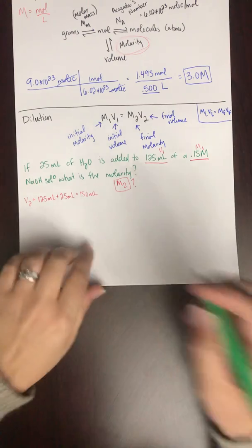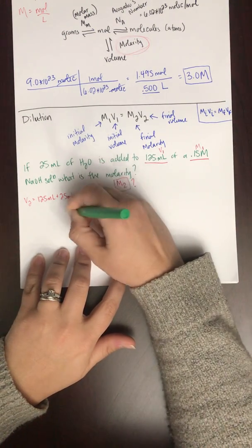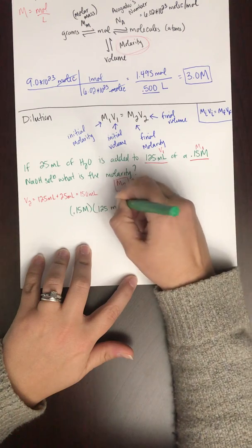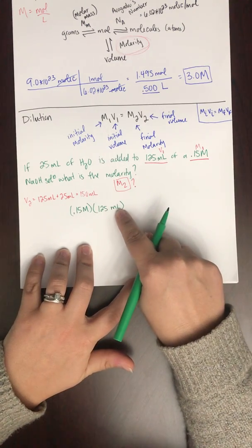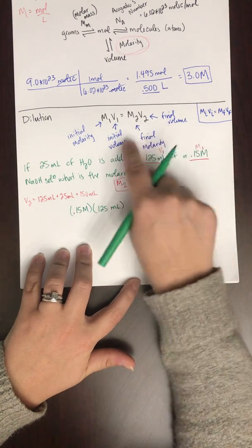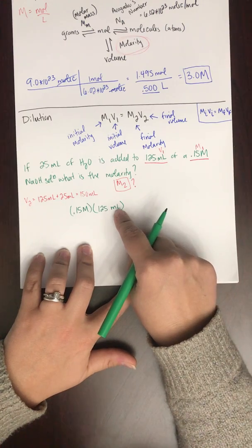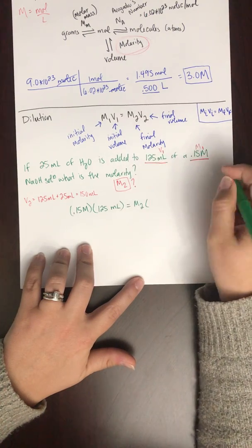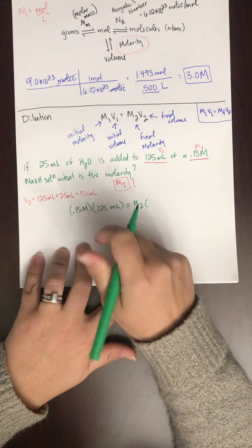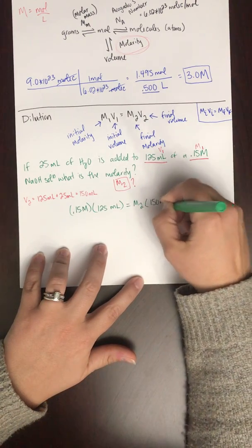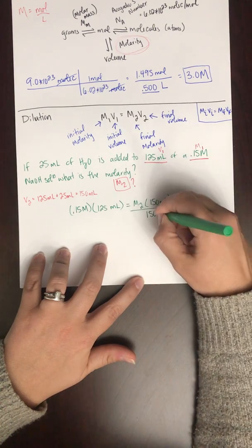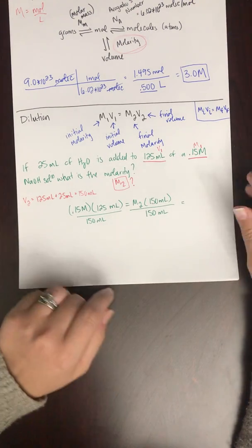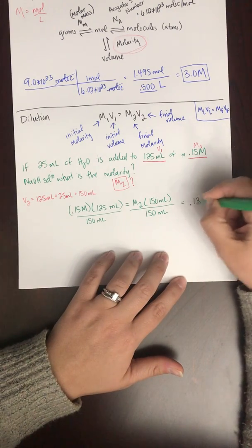So M1, I said, was 0.15 molar, 0.15 molar, times my initial volume, 125 milliliters. This volume can be in whatever unit. It does not have to be in liters. It does have to be in the same unit as the other volume, but it can be in milliliters or liters or whatever. Equals M2, that's what I'm solving for, M2, times V2, which we just said if we add 25 milliliters, then V2 is going to be 150 milliliters. So I'm going to solve for M2 by dividing both sides by 150 milliliters.